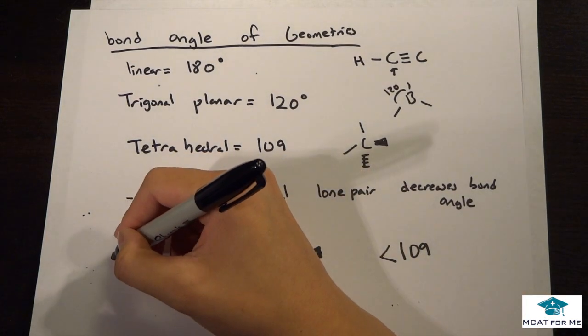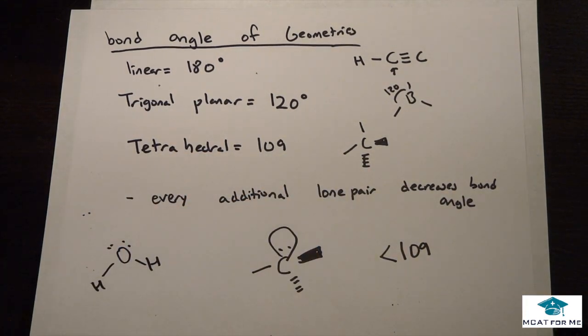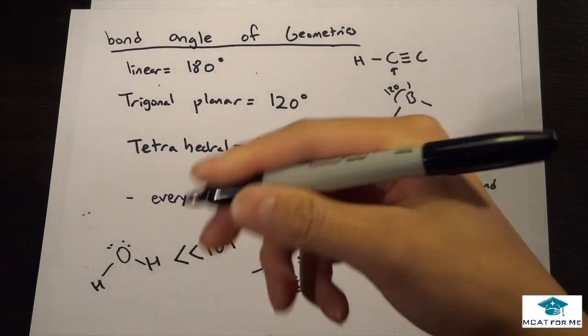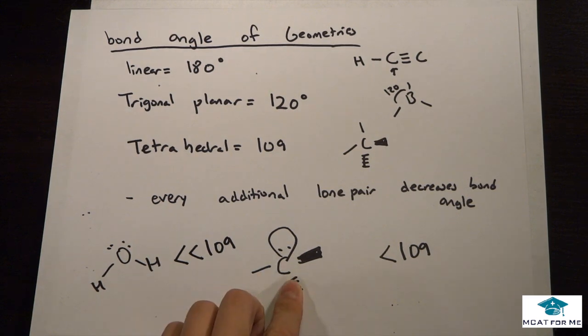And now if we had something like this, what would its bond angle be? Well, since we have even more lone pairs now, it would be even less than this molecule right here.